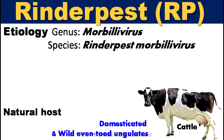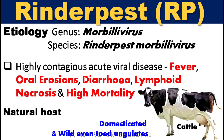This disease is caused by the genus Morbillivirus and the species Rinderpest Morbillivirus. This viral disease is a highly contagious, acute viral disease characterized by fever, oral erosions, diarrhea, lymphoid necrosis, and high mortality in domesticated and wild even-toed ungulates.